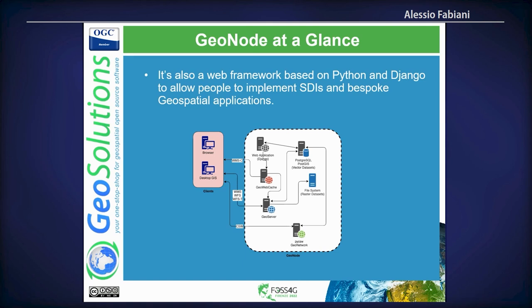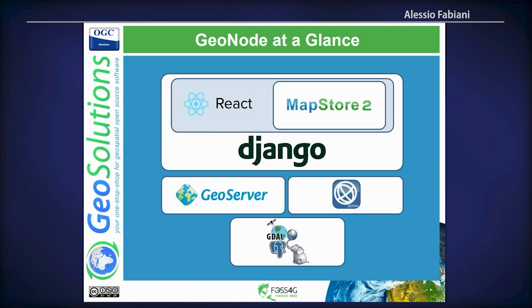Geonode is also a web framework based on Python and Django — Python and JavaScript, because it's roughly half and half. The top part is Geonode itself, but the complete application when you deploy it is composed of other services: GeoServer, PyCSW, Postgres, and others.